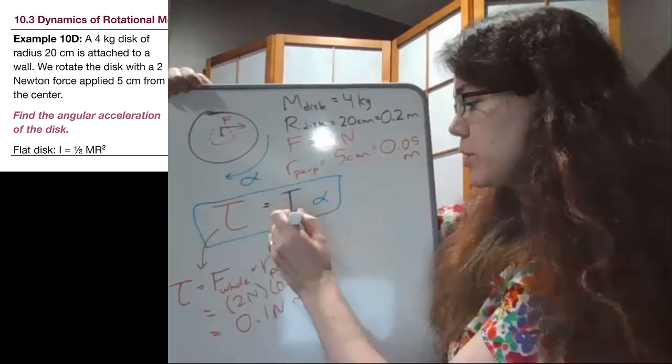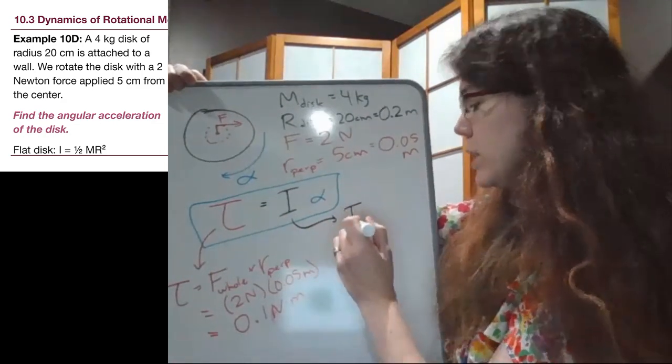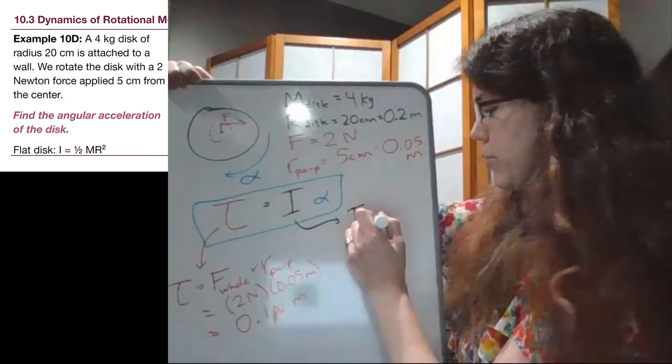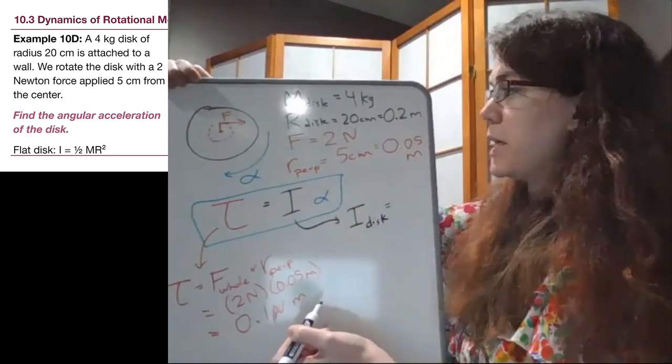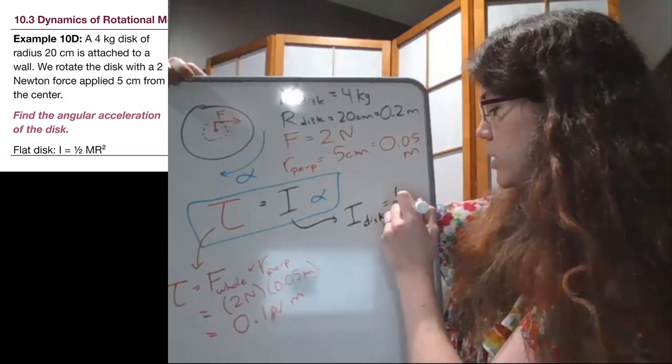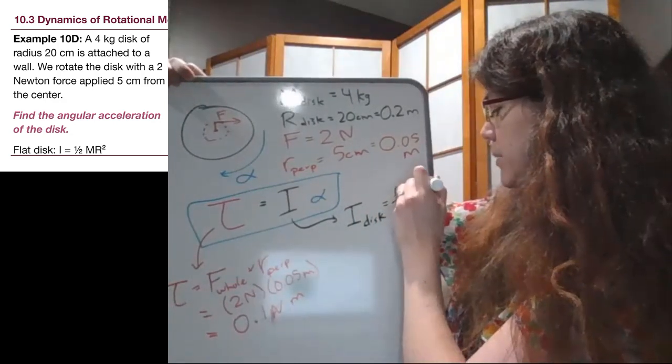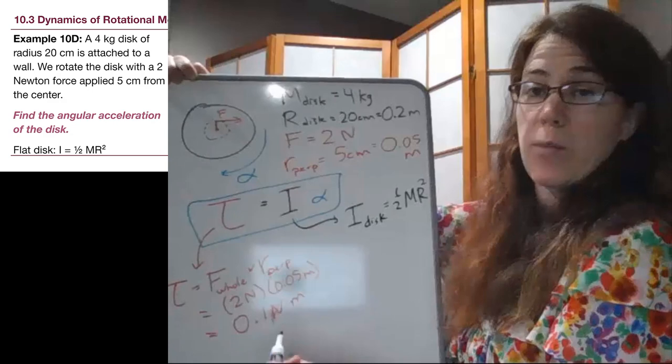The moment of inertia we also have enough information for. We know, and it's on the bottom of our slide if we forgot to look it up, we know that we can look up a standard shape like a disc, and find what that moment of inertia term looks like. And in this case it's 1 half m r squared.